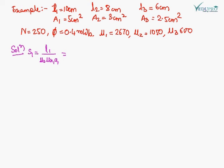So reluctance due to the first component is L₁/(μ₀μᵣ₁A₁). Put the values here. We get 59608.598 per weber.